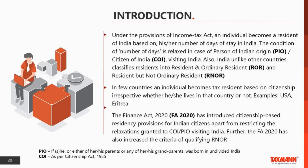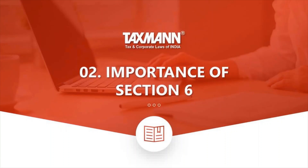Why are we discussing persons of Indian origin and citizens of India? Because one of the amendments made by Finance Act 2020 affects this category. The importance of Section 6 lies in the charging section — Section 4 — which levies tax on income earned by every person. Section 5 provides the scope of total income, telling us on what income a person should pay tax. Residency criteria comes into play here because the quantification of total income is based on my residential status.